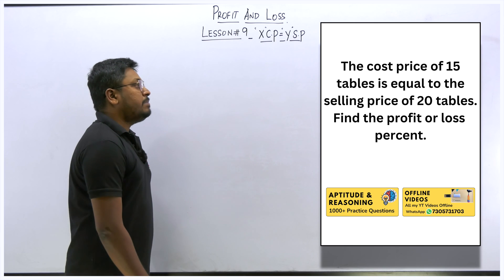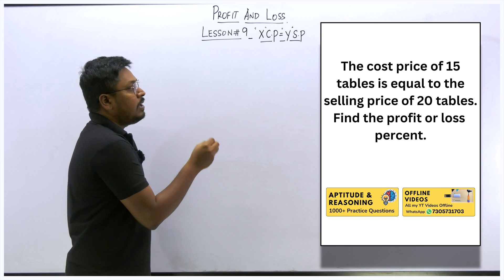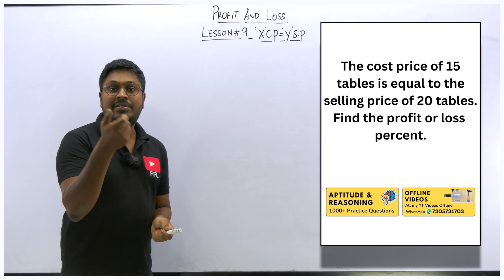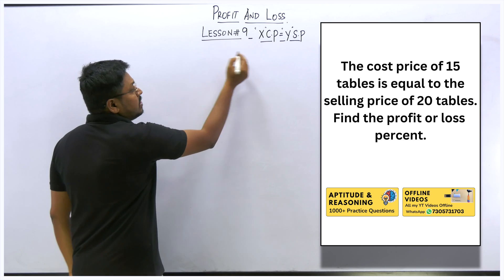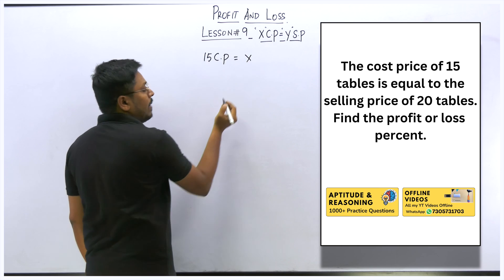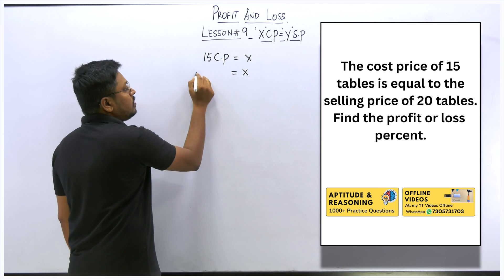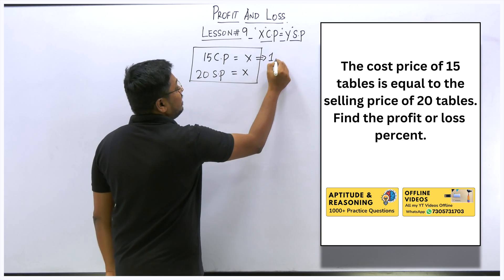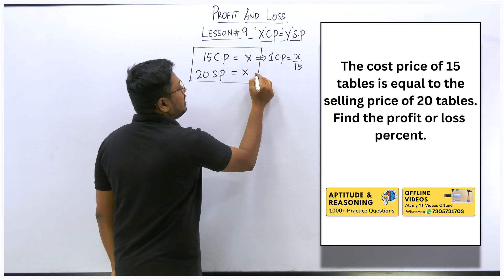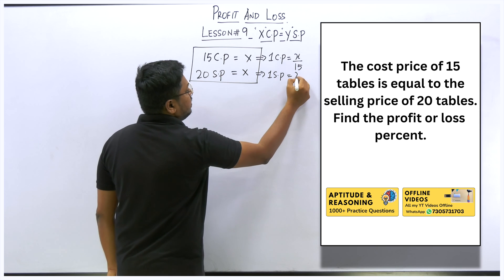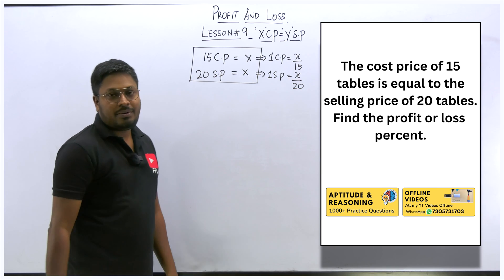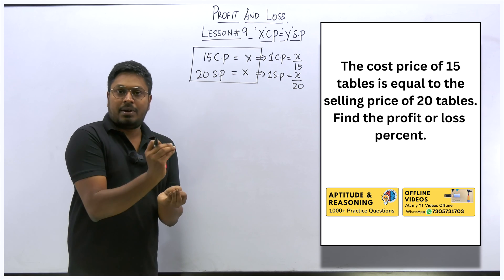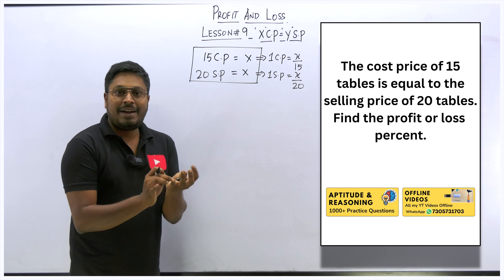Question number two: the cost price of 15 tables equals the selling price of 20 tables — find whether it is a profit percentage or loss percentage. Same concept. Let 15 tables' cost price = x. That same amount x equals 20 tables' selling price. One table cost price = x/15. One table selling price = x/20. Now apply the profit percentage formula: (SP − CP) / CP × 100. If the answer is positive it is profit; if negative it is a loss.